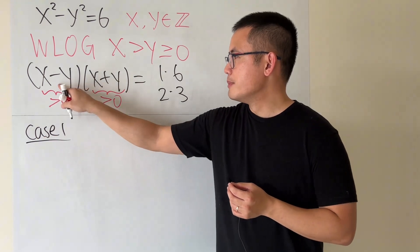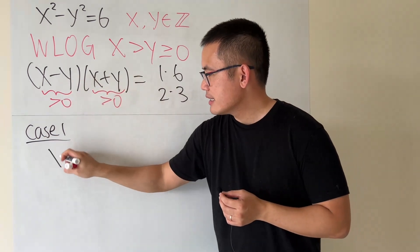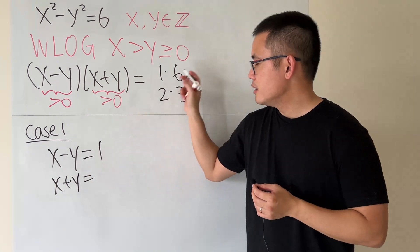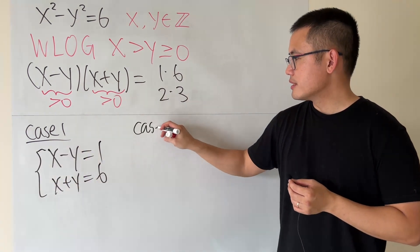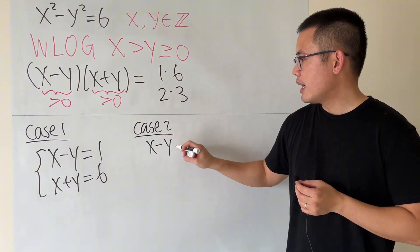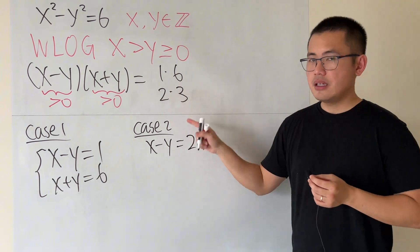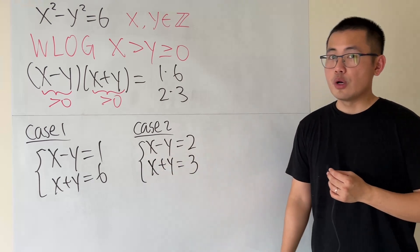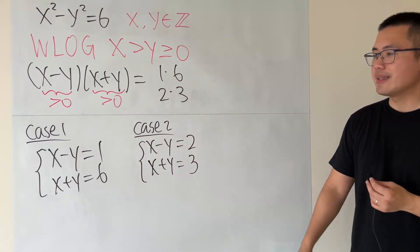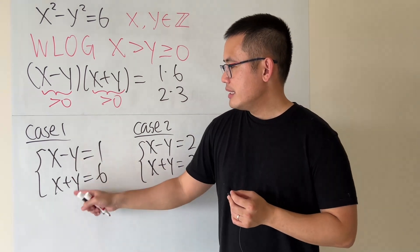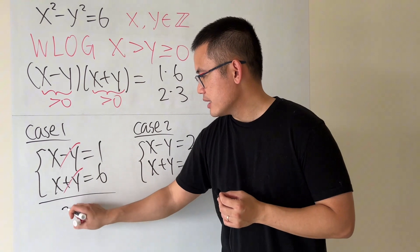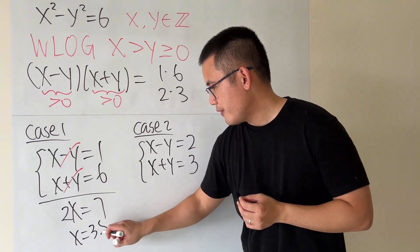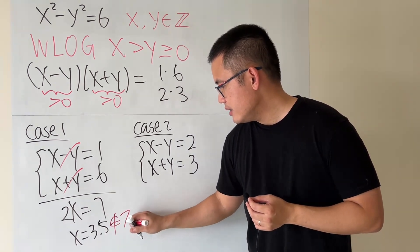Case one, this is smaller than that, so I will just say x minus y has to be one, and the other one is x plus y is equal to six. And we can also have the second case. x minus y equals the smaller factor, and then the other one is three. And now if we can solve the system of equations in integers, then we have solutions. If we cannot, then we cannot. Here, this and that cancel when you add the equations, and we get 2x equals 7, and we see x is equal to 3.5, which is not an integer.